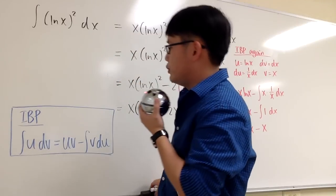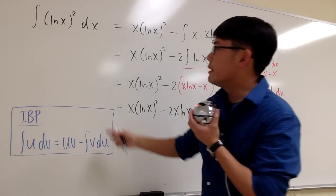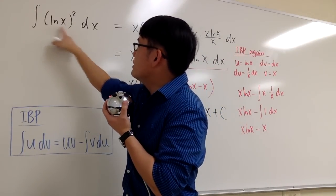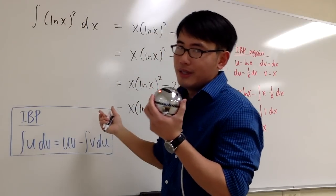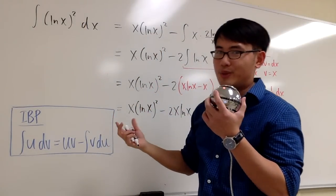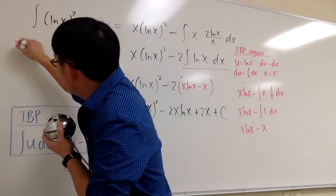So the way to do this is to use integration by parts. But as you can see, we only have one thing inside, namely ln x raised to the second power. So we don't have two functions, so what do we do? Anyways, let's think about it.